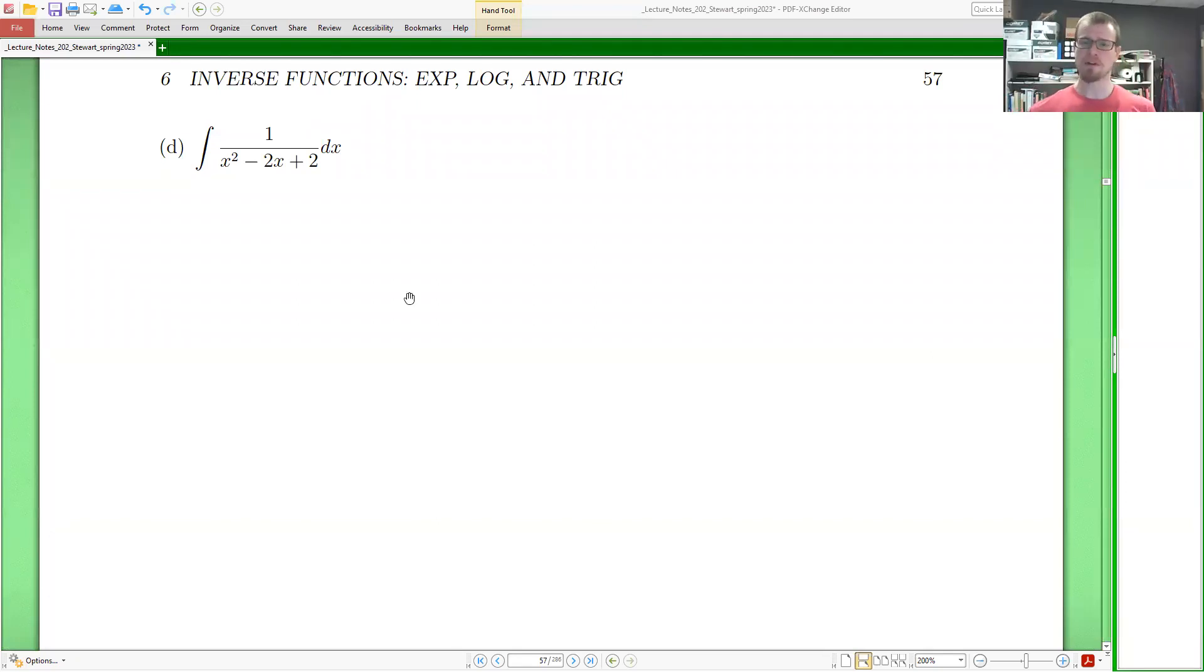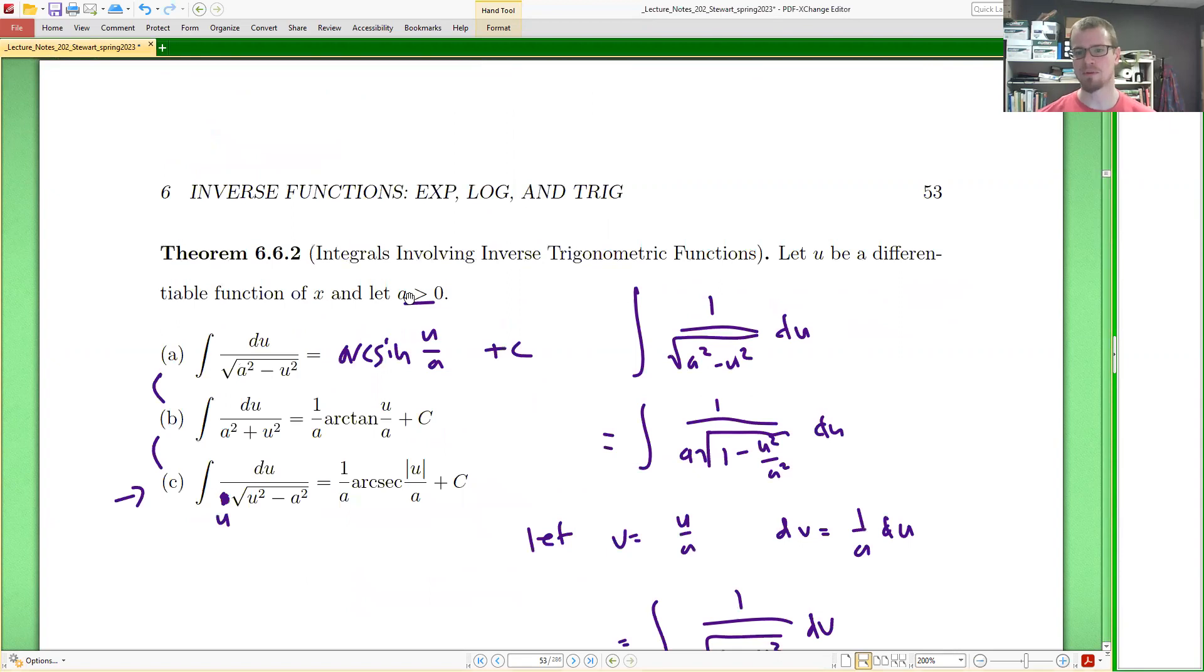For this one, we want to see that it's in the section, so we might expect to have to use the theorem that we were provided most recently. And if we look back to that theorem, we'll notice that there's only one scenario that doesn't involve a radical in the denominator. So I'm expecting that we'll have to make use of this arctangent formula here.